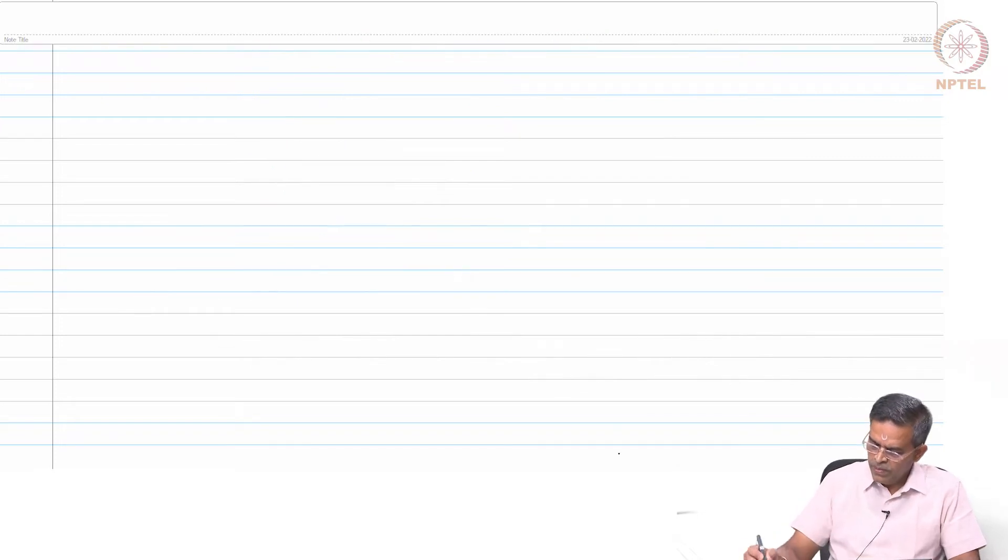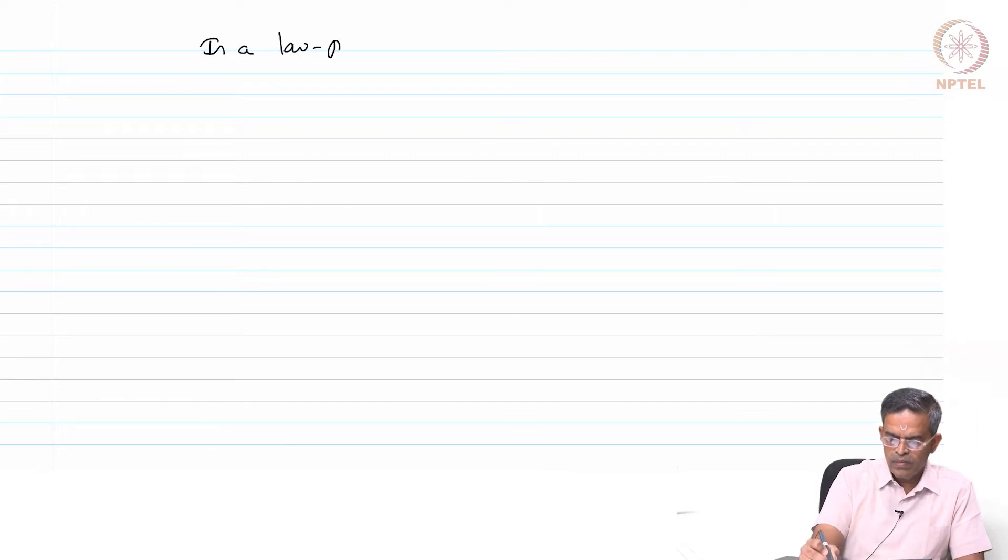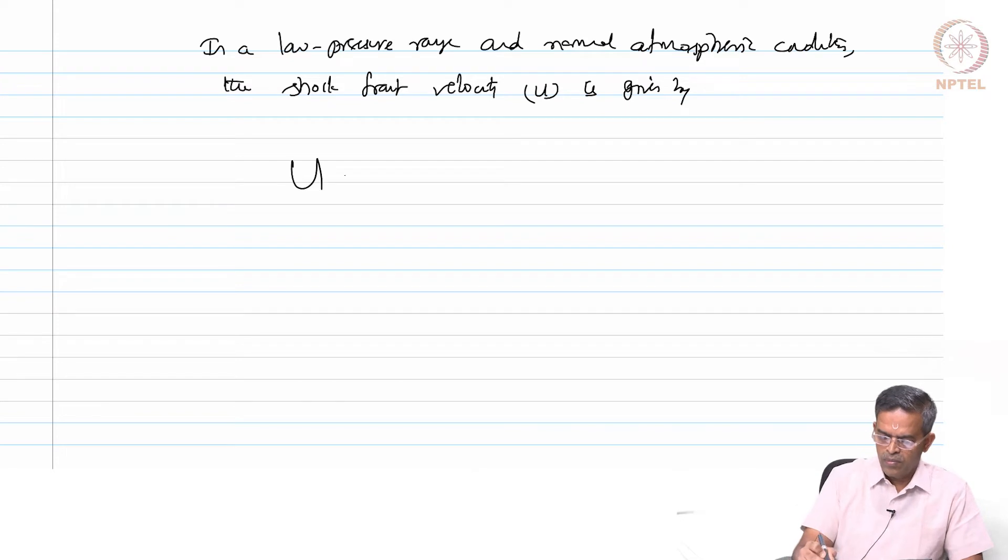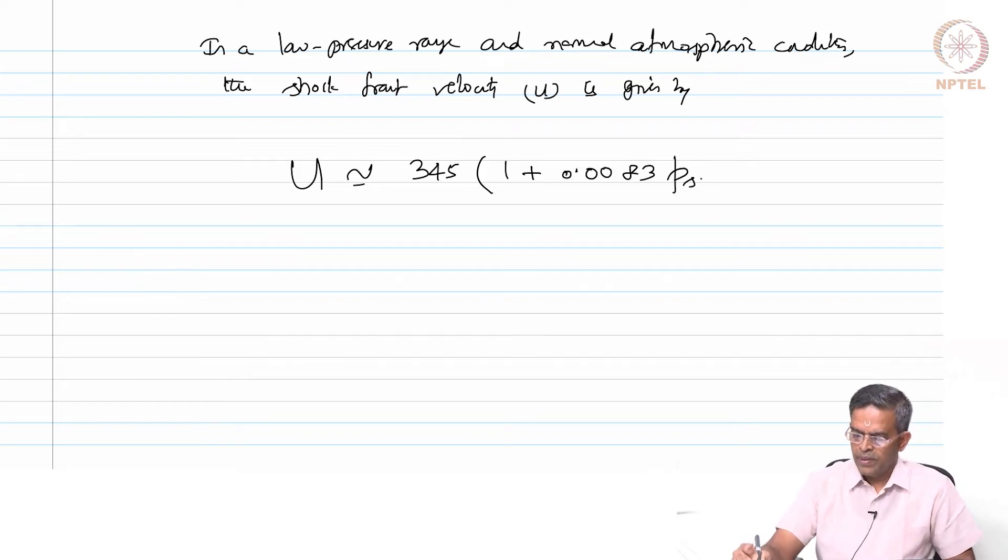In a low pressure range and for normal atmospheric conditions, the shock front velocity u is given by approximately 345, I should say approximately 1 plus 0.0083 PSO to the power 0.5 in meter per second, equation number 5.